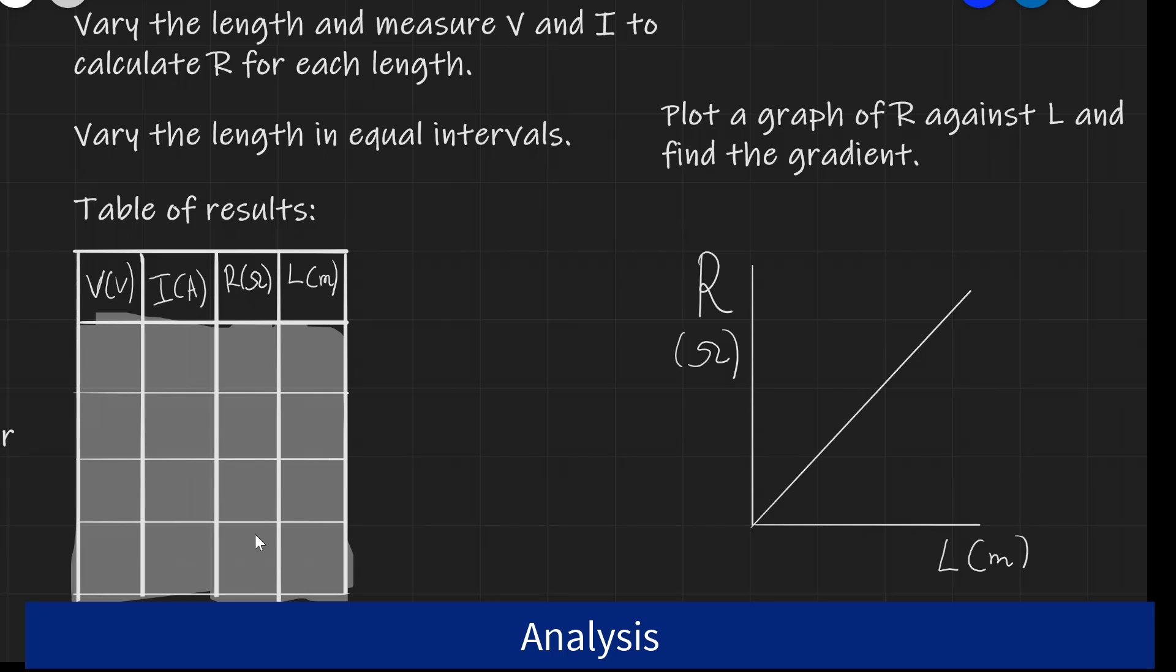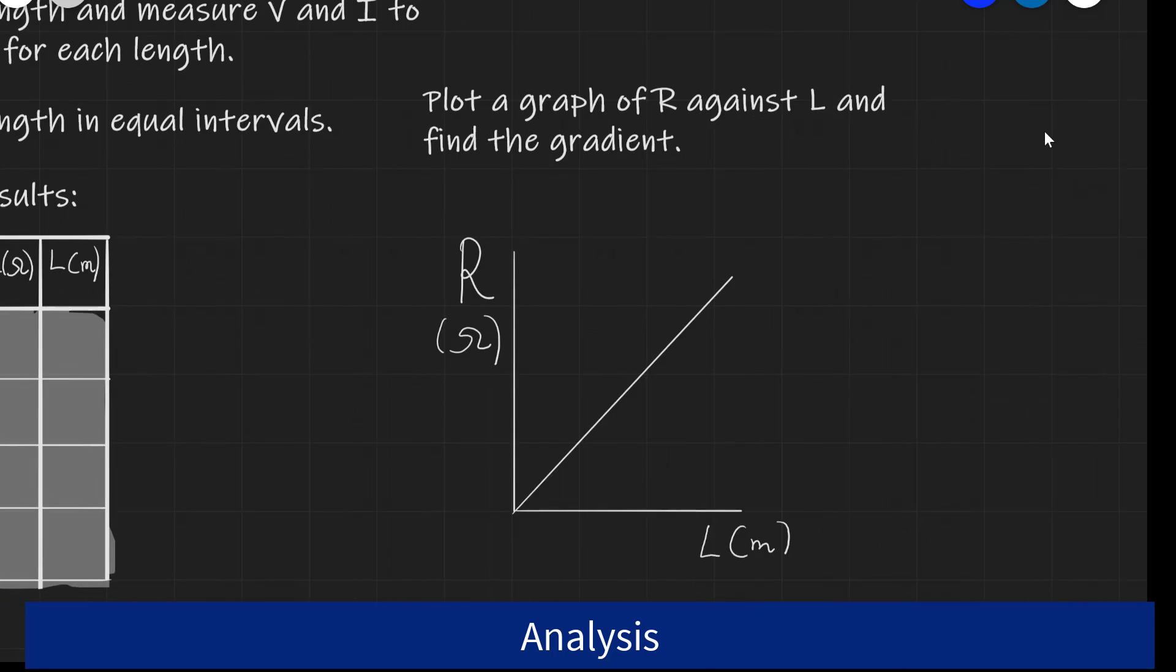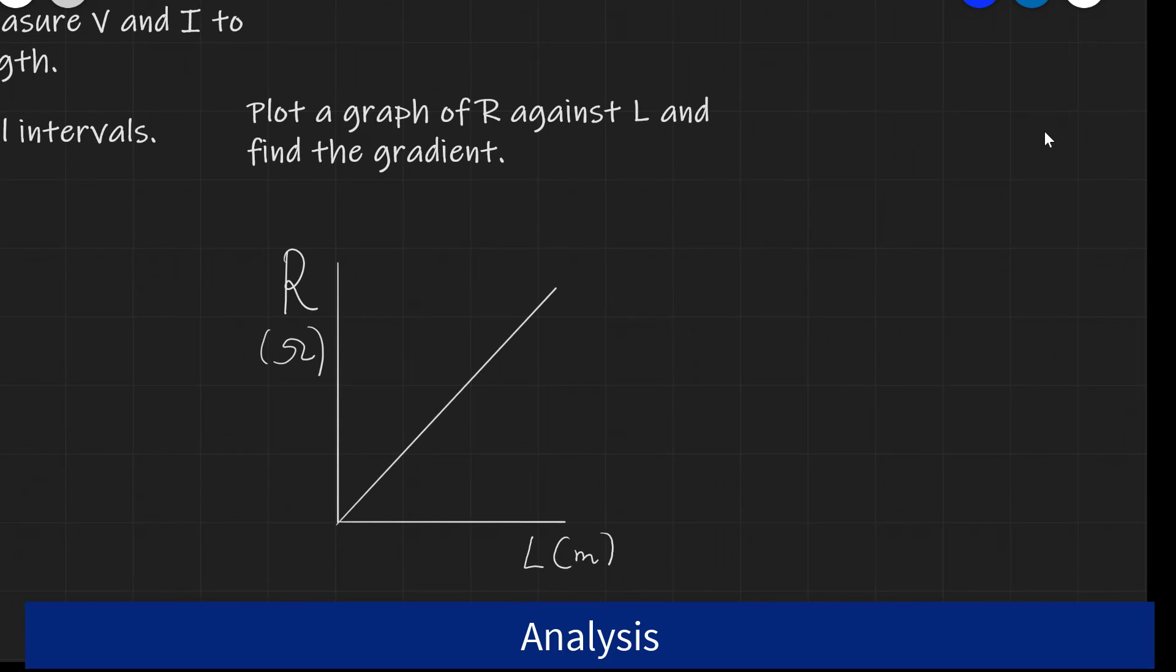Once we have multiple readings of R for given lengths, we're going to plot a graph of the resistance against the length and we're going to be able to find the gradient. Let's do our Y equals MX plus C analysis.